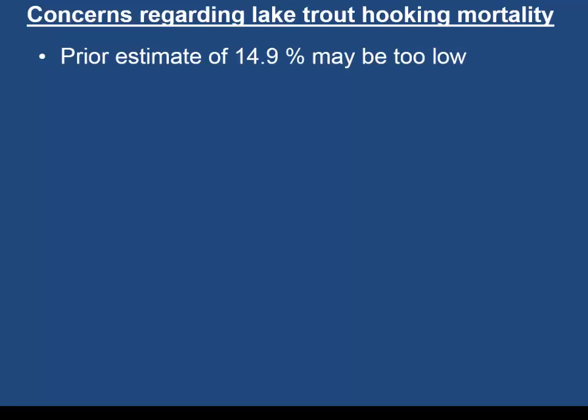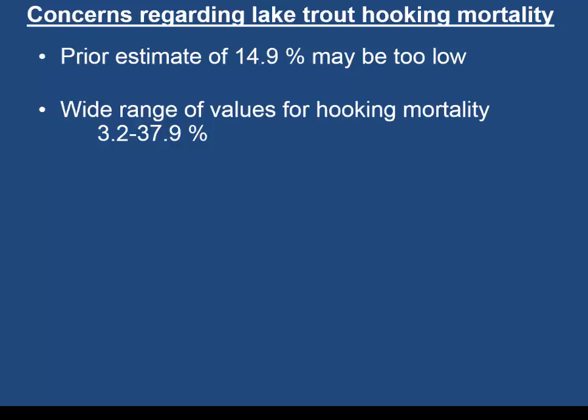With the onset of stock assessment models using statistical catch-at-age models in the early 2000s, key quantities in managing lake trout were reviewed. These models require knowing total harvest, including fish that are released and die. There were concerns that the singular 15 percent hooking mortality estimate may be too low, partly from feedback from certain management units and partly because the confidence interval around that estimate ranges from 3 to 38 percent — making the value used in management critically important.